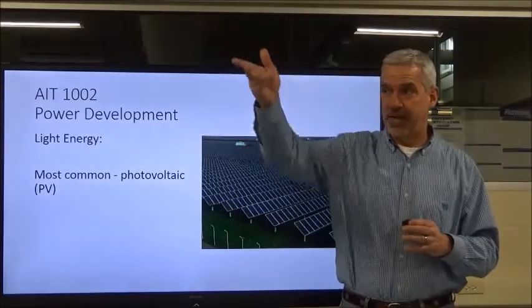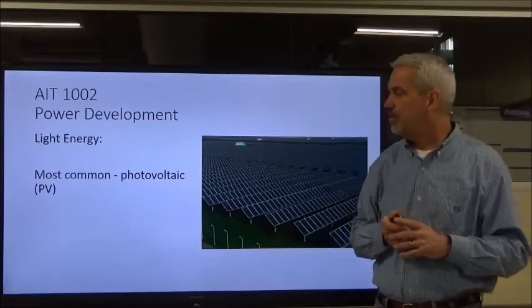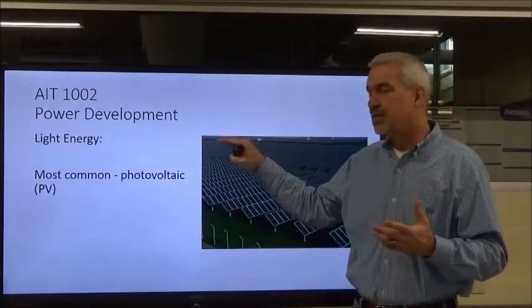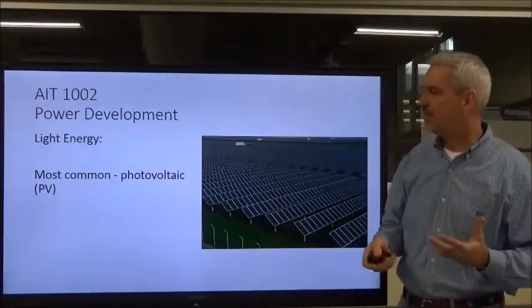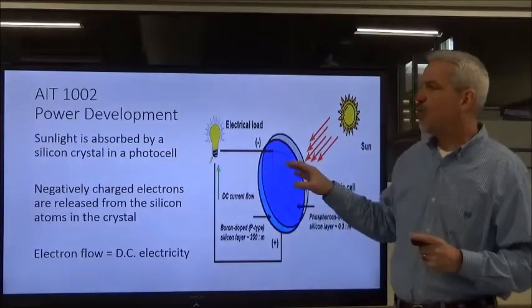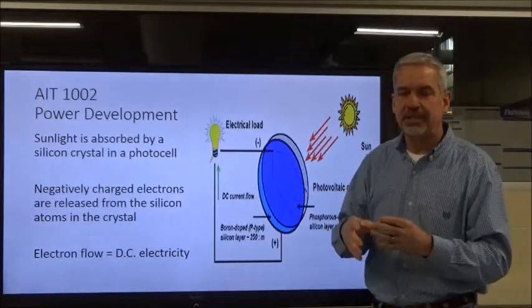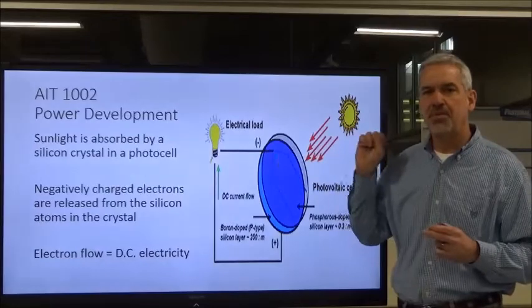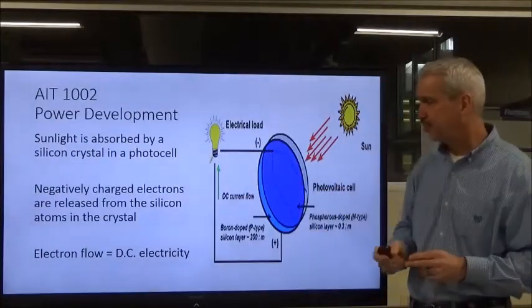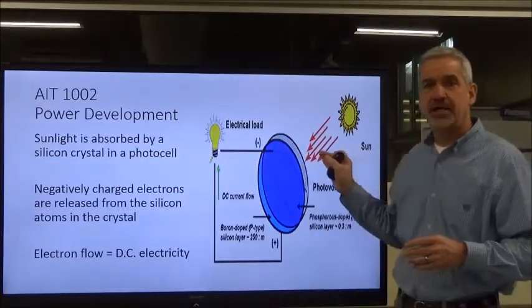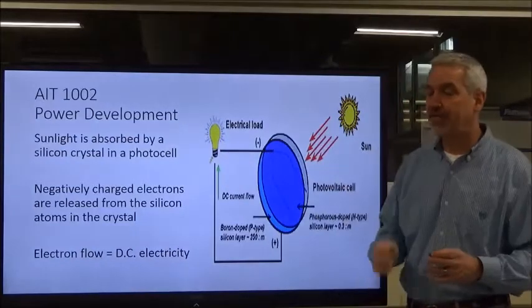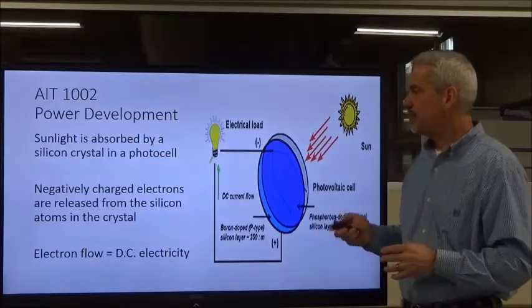We're starting to see more and more solar panels around. The price of this technology is coming down — it used to be cost prohibitive, but now costs are dropping and you can get breaks from power companies if you install them. Basically, sunlight is absorbed by a silicon crystal. When sunlight hits that silicon crystal, it releases atoms and the negatively charged electrons start to flow — which is basically electricity. Like chemical energy from batteries, the electricity from solar panels is DC, direct current — not alternating current.